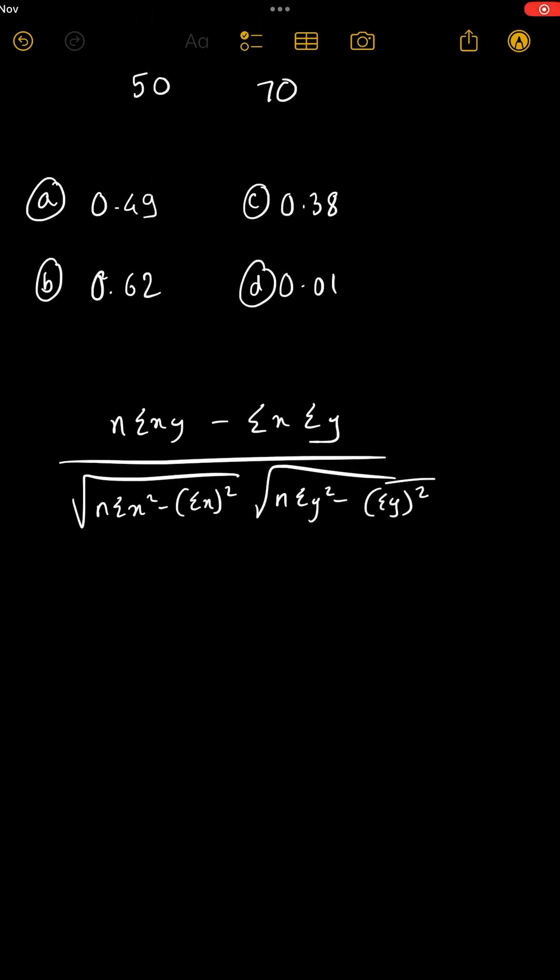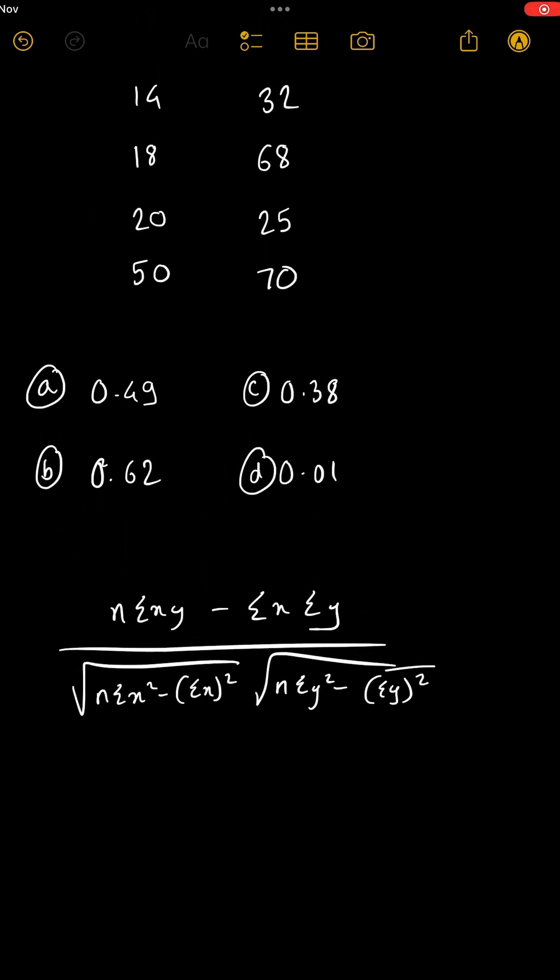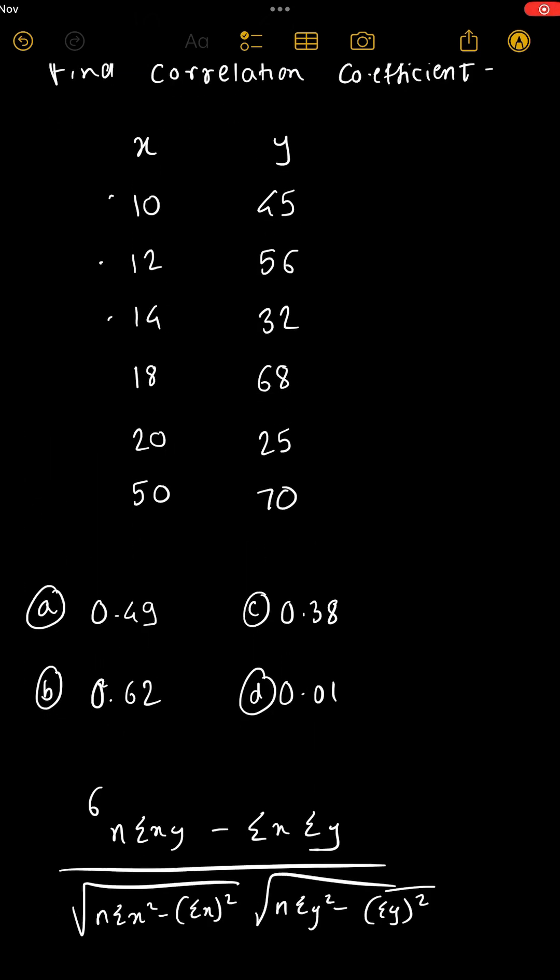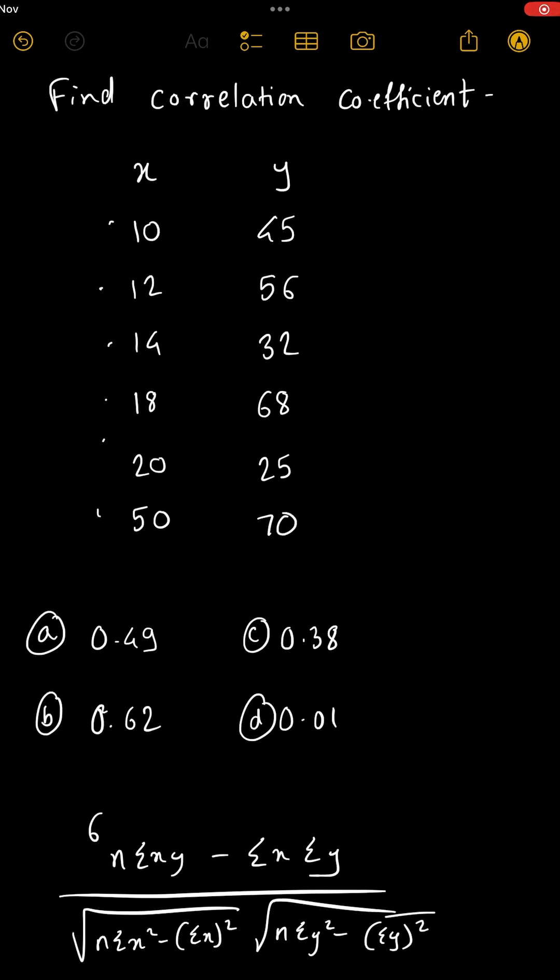In exam don't write the formula rather try to find each term directly. So now we know n is 6 because there are 6 pairs here. Summation xy, how will we calculate? x into y is 10 into 45, this into this, and so on, and then we have to take sum of x into y.